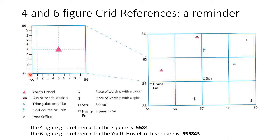So we move along here, we get to 55, we write that down. We then work out that the youth hostel is about halfway across, so that gives us 555. We then go up the stairs: 84, and once again it's smack bang in the middle — 845. Now the tricky thing is these grid lines are on your maps, so you need to work this out in your head. A little trick: you can use a ruler. Measure the grid square, divide it by 10, and you'll have what you need. So our final six figure answer is 555845.